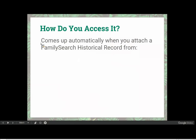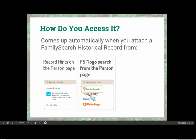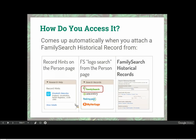How do we get to the Source Linker? It comes up automatically whenever you attach a FamilySearch Historical Record from one of three places: when you click a record hint on the person page, when you do a logo search from the person page, or when you find a record directly in FamilySearch Historical Records and attach it from there. We will show examples of both.